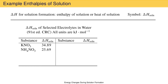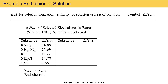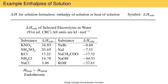Let's look at some experimentally measured heats of solution for electrolytes — substances that break into ions in aqueous solution. Data are from the 91st edition of the CRC, with all values in kilojoules per mole. Potassium nitrate, ammonium nitrate, potassium chloride, ammonium chloride, and sodium chloride all have a positive heat of solution — dissolving them is endothermic, so the solution feels colder. Sodium bromide, sodium iodide, sodium acetate, sodium hydroxide, and potassium hydroxide all have a negative heat of solution — dissolving them is exothermic, so the solution feels warmer.